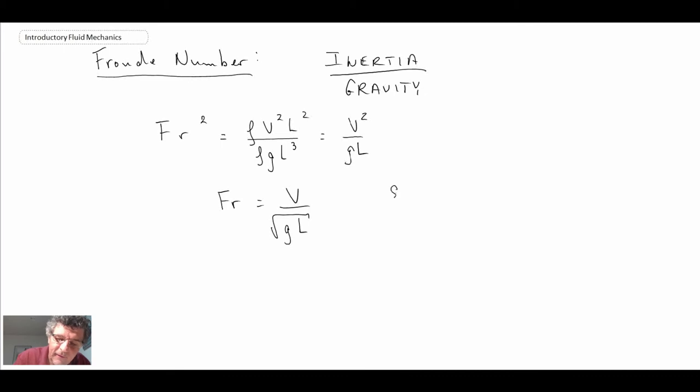This is for surface flow, so on the surface of the ocean or in a river, wave activity, and open channel flow, and the hydraulic jump. Here, L denotes the depth of liquid. I'll say water, but it depends upon the fluid that you're dealing with. So that's the Froude number.